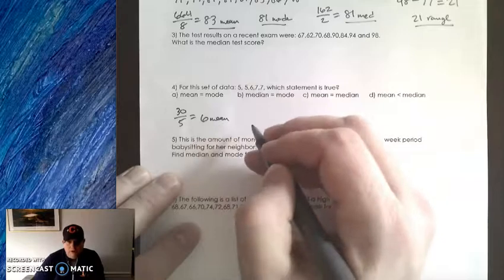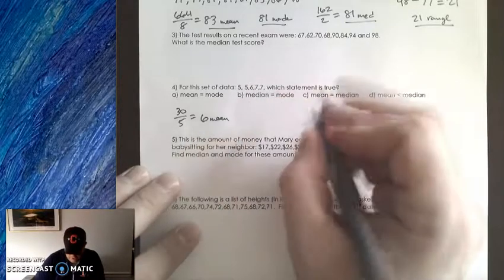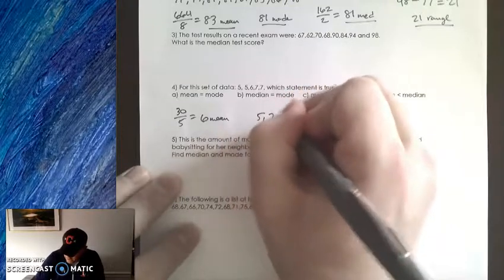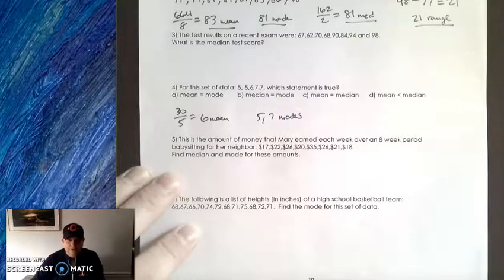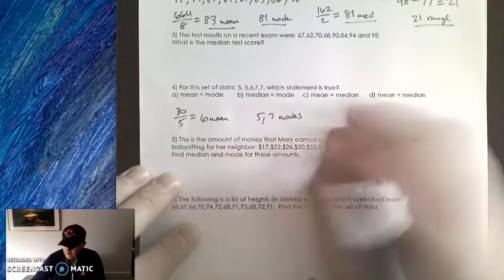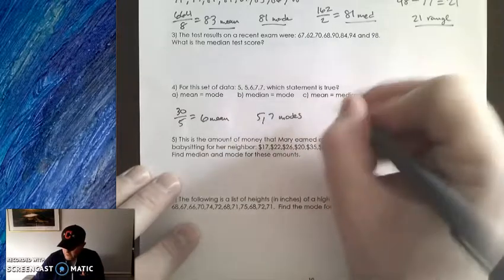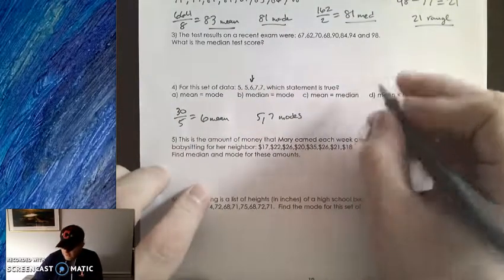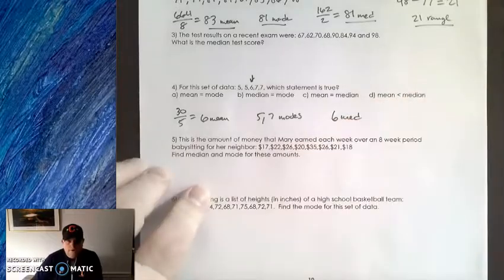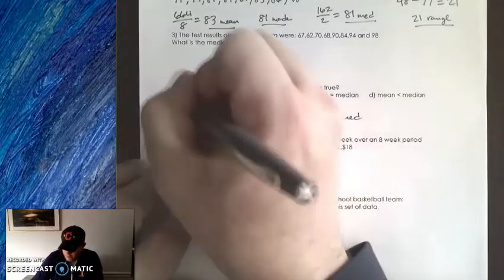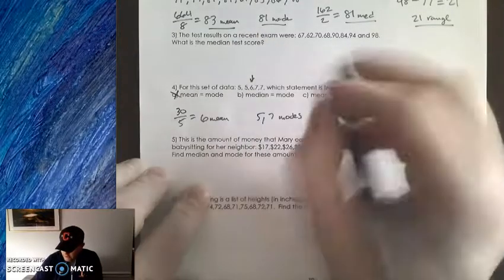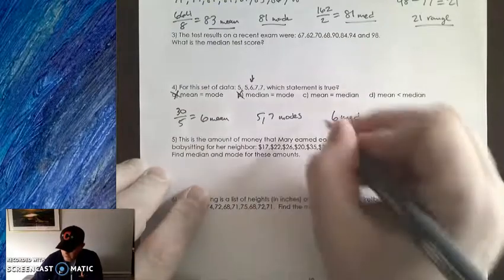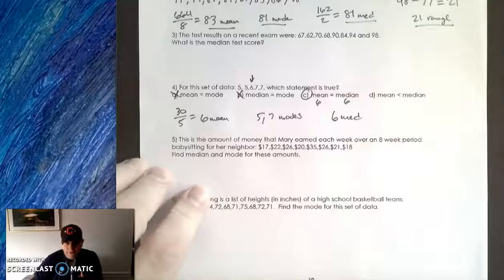The mode is the number that pops up most often, and in this case, there's two 5s and two 7s. So 5 and 7 are your modes. Mode is really not a good way to represent central tendency because mode has multiple answers, and it's just not really used a lot in cases of statistics. The last is the median. In this case, this is easy because we got five numbers. So 1, 2, and boom, there it is. 6 is the median. Does the mean equal the mode? Nope. We got two modes. Doesn't work. The median does not equal the mode. Does the mean equal the median? Does 6 equal 6? Absolutely. So that is your correct answer.